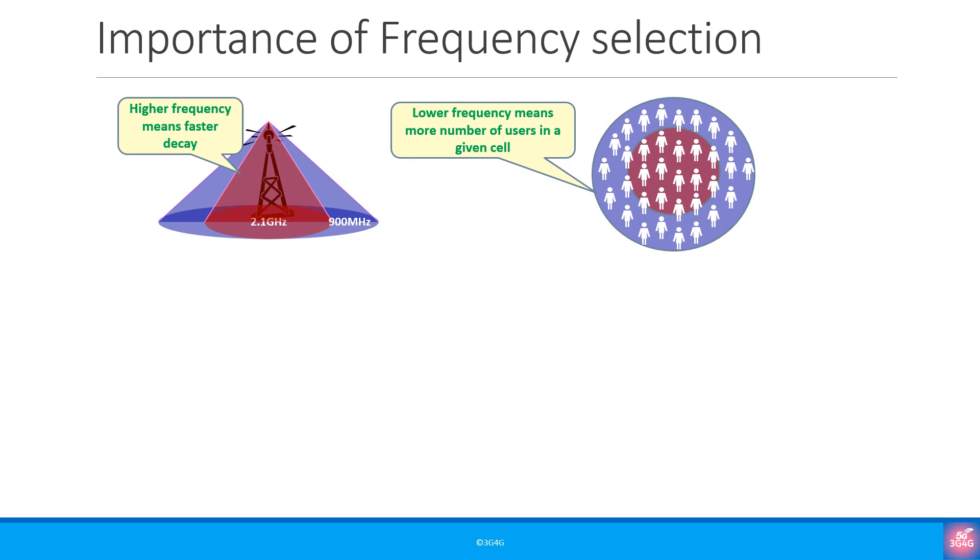However, what a larger cell would mean is that now there are greater number of users in a given cell. Take for example, if a cell can only give a maximum of 100 Mbps at any instant of time. If there are 100 users then each of them gets 1 Mbps.